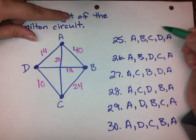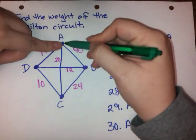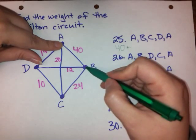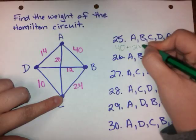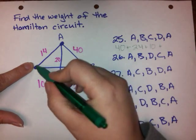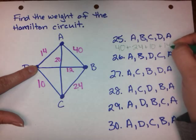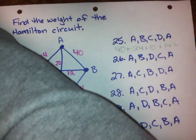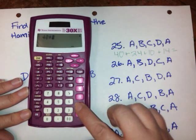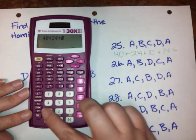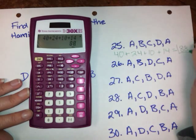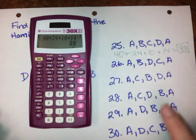So for number 25, we need A, B, C, D, A. Edge A to B has a weight of 40. So it's going to be 40 plus B to C which is 24, plus C to D which has a weight of 10, plus D back to A which has a weight of 14. And then what we want to do, if I don't knock stuff off my desk, is plug that into our calculator. So 40 plus 24 plus 10 plus 14 equals 88. So the answer for number 25 is 88. That's the weight of the Hamilton circuit that they gave us.